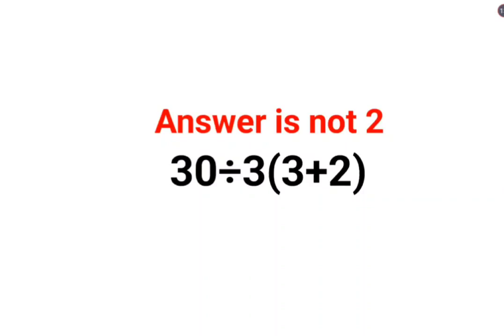Welcome everyone. So today we are going to understand why the answer for this question is not supposed to be 2. See here we have 30 divided by 3 and then in bracket we have 3 plus 2.